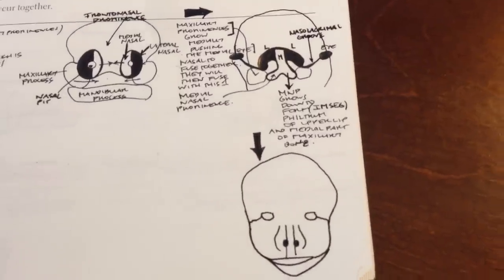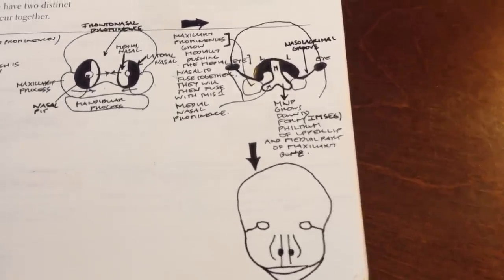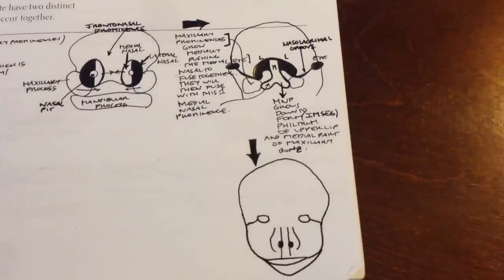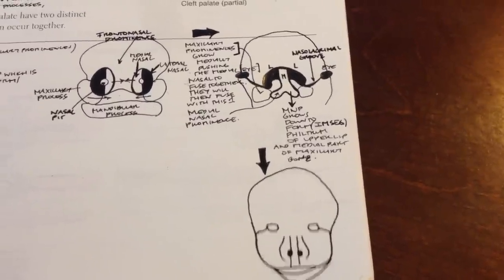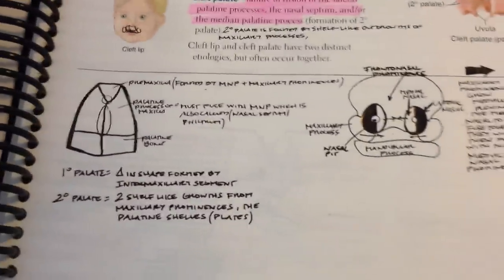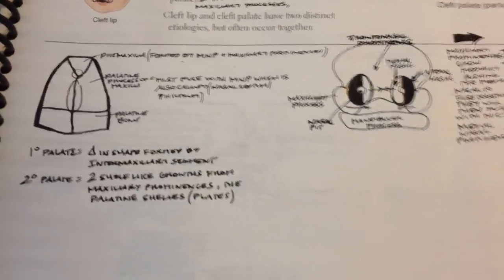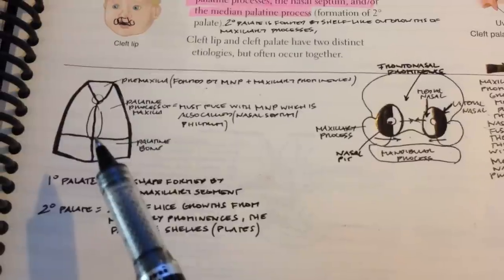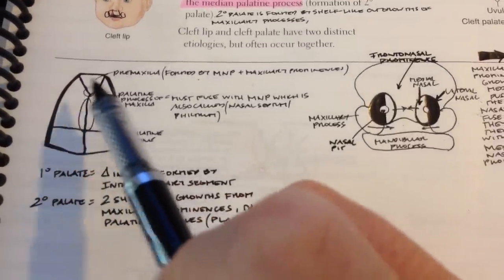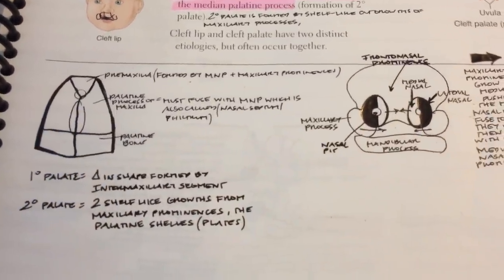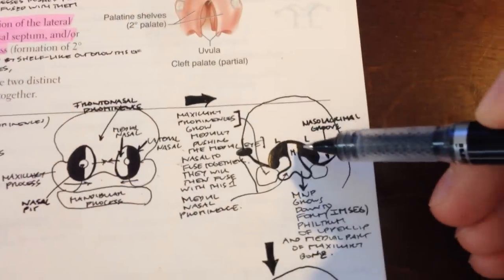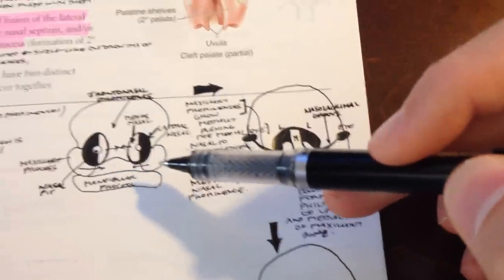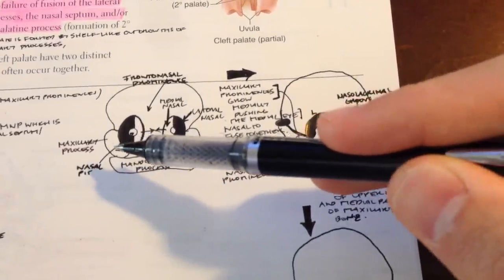Now let's compare normal development with the pathology of cleft lip and palate. The palate is formed by two parts. The primary palate has a triangular shape and is formed by the intermaxillary segment, which we discussed is formed by the fusion of the medial nasal processes — driven by the growth and movement of the maxillary processes toward the midline.